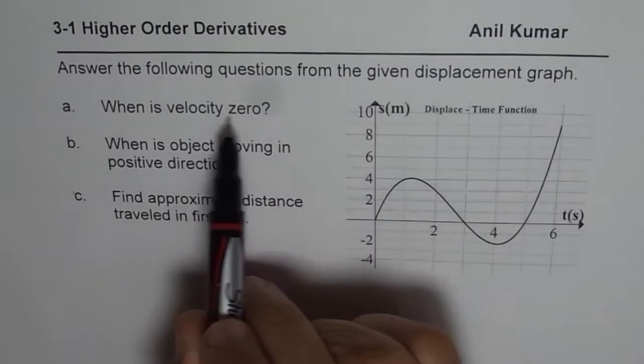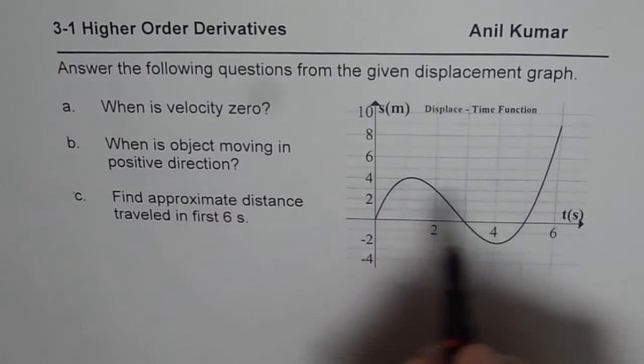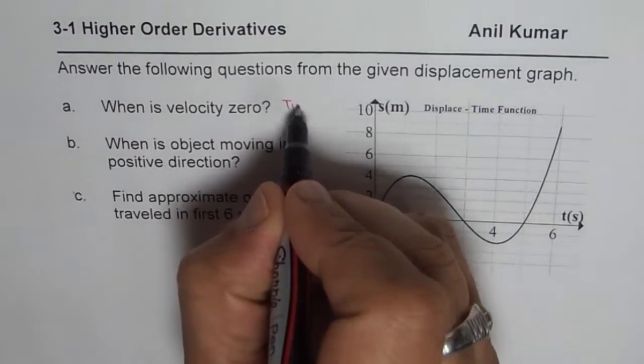When is the velocity 0? Velocity will be 0 at turning point. So we are looking for turning points.